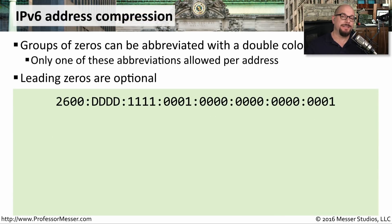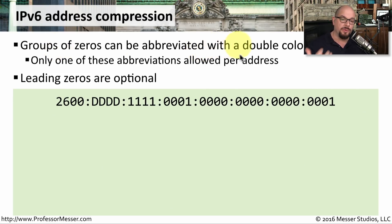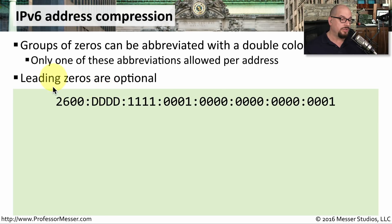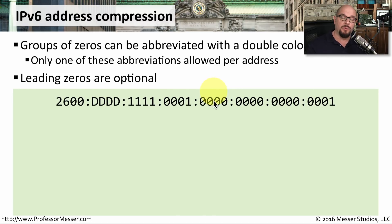Fortunately, IPv6 allows us to abbreviate certain kinds of addresses. If any groups happen to be all zeros, IPv6 compression allows us to abbreviate those groups with a double colon — but we can only use this abbreviation one time per IPv6 address. We can also remove any leading zeros. So we can take a long address and compress it in a number of different ways.